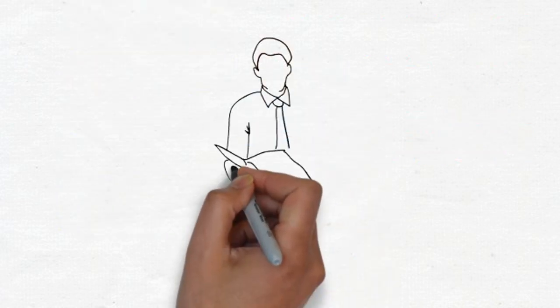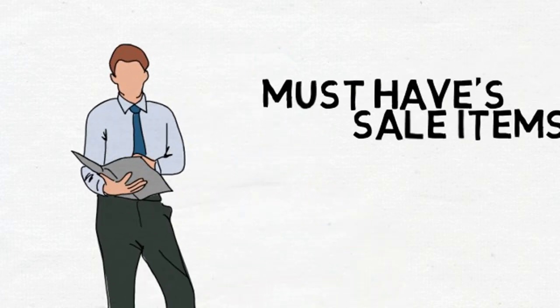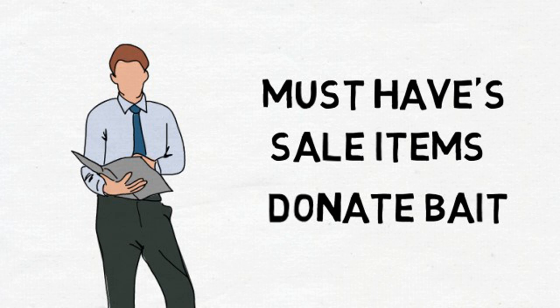First thing you need to do is grab a notepad and write down three categories: Must Haves, Sale Items, and Donate Bait. Now, walk around your house and begin categorizing your items.